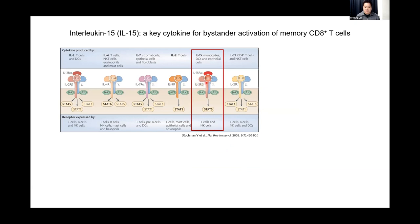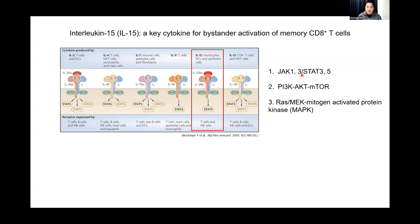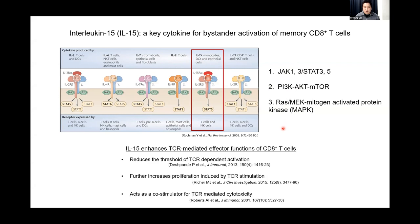IL-15 belongs to the common gamma chain cytokine family, and it is widely known as the homeostatic cytokine that is crucial for development, maintenance, and survival of memory CD8 T-cells and NK-cells. IL-15 is produced mainly by monocytes, dendritic cells, and epithelial cells. Upon binding to its receptor, IL-15 activates three parallel downstream signaling pathways. Some of these signaling pathways can also be induced by TCR-mediated activation, and due to this shared signaling pathway between IL-15 and TCR stimulation, previous work had focused on the role of IL-15 in promoting TCR-mediated effector functions in CD8 T-cells.